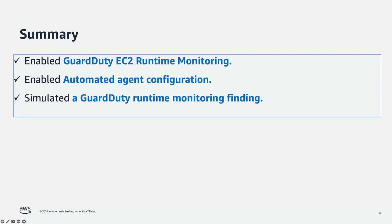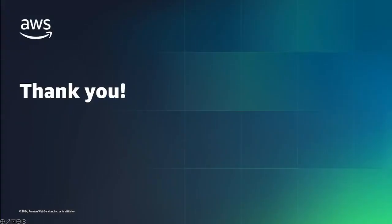In this video, we looked at how to enable GuardDuty's EC2 runtime monitoring. We enabled automated agent configuration, which is the preferred option for most customers, as it allows GuardDuty to manage the security agent on their behalf. We simulated a GuardDuty runtime monitoring finding from an EC2 instance by querying a domain name associated with a known command and control server. To learn more on runtime monitoring, follow the link in the description below. Thank you for watching and happy cloud computing from all of us here at AWS.